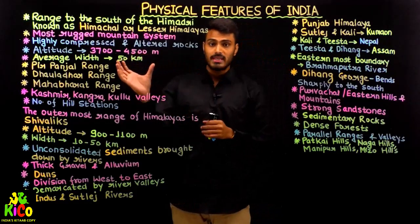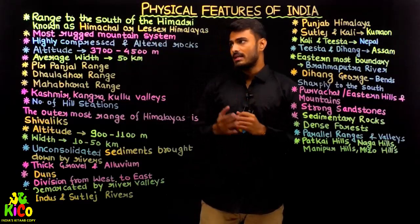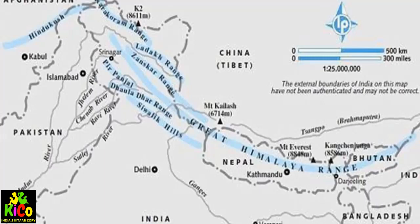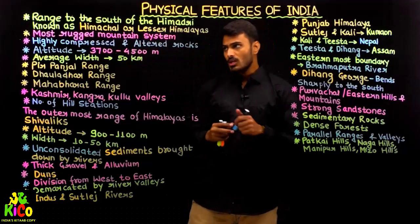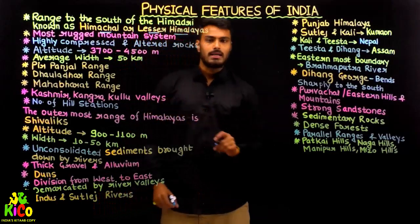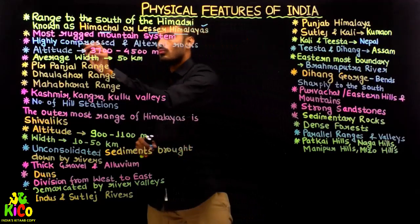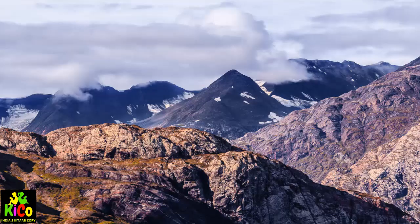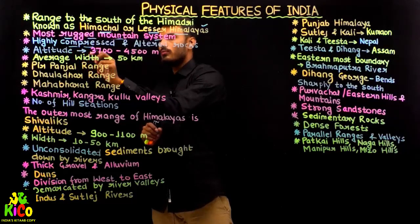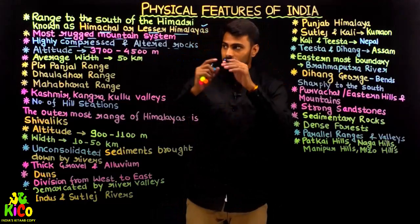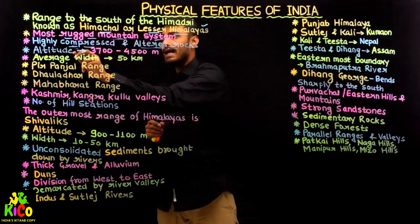Vertically, let us talk about the second range of Himalayan mountain ranges, which is the range to the south of the Himadri. Himadri is the topmost part containing glaciers like Siachen, Gangotri, and Yamunotri. Below it we have Himachal or Lesser Himalayas. This range is the most rugged mountain system, composed of highly compressed and altered rocks.